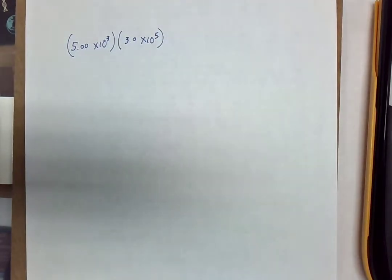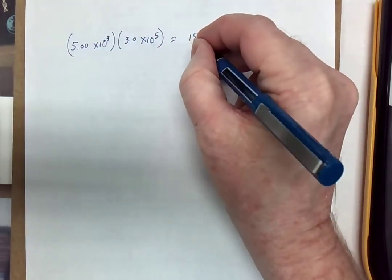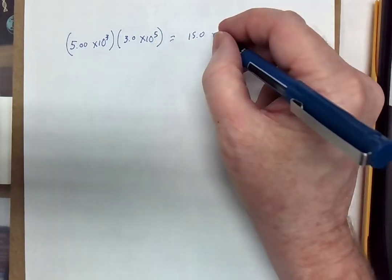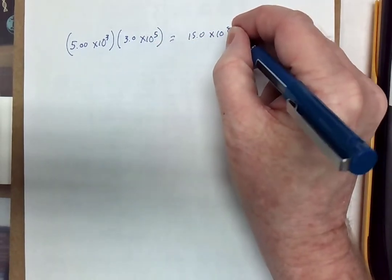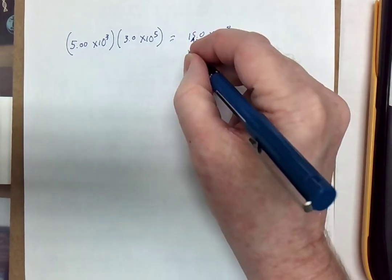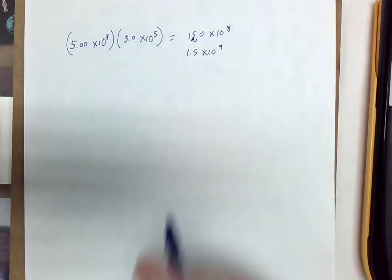Now, just doing this kind of old school, the 3 times the 5 is 15, 10 to the third times 10 to the fifth is 10 to the eighth. I know that's not proper scientific notation. This has to move over 1, so I get 1.5 times 10 to the ninth.